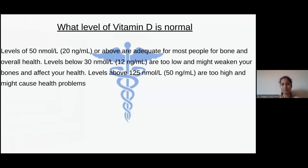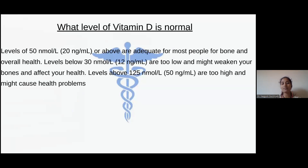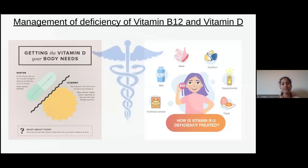Regarding normal levels of vitamin D: levels of 50 nmol/L or above are adequate for most people for bone and overall health. Levels below 30 nmol/L are too low and might weaken your bones. Levels above 125 nmol/L are too high and may cause health problems. So we should know both what low and high vitamin D levels cause.